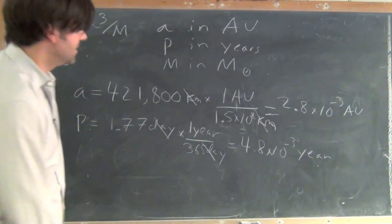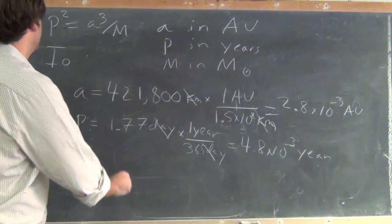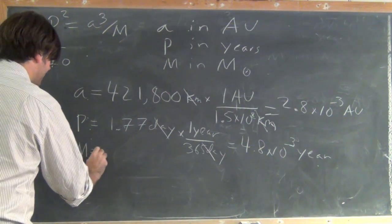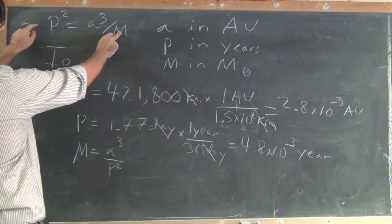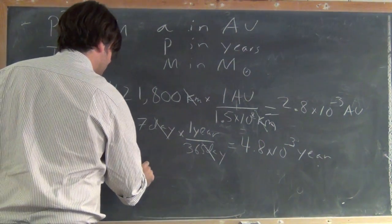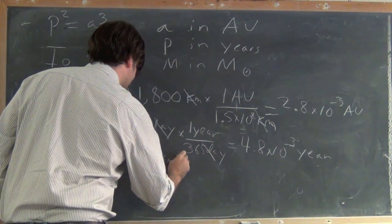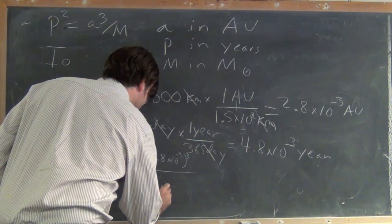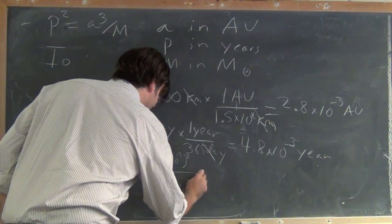So I can now just plug both of these into the formula, but I'll invert it. So I'm going to rearrange this formula and write that m is equal to a cubed over p squared, just swapping the m up here and moving the p squared down there. So just plugging this in: 2.8 times 10 to the minus 3 cubed divided by 4.8 times 10 to the minus 3 squared.